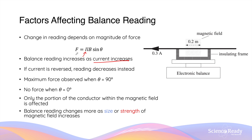By looking at the equation and focusing on the variable I or current, we know that the force increases as the current size increases. And if the force increases, the extent to which the mass reading changes will also increase. Remember, the direction of the current is also very important to consider, because if the current direction is reversed, the direction of the force will also be reversed. So that means if the reading increases in a previous scenario, the reading will decrease instead when the current direction is reversed.